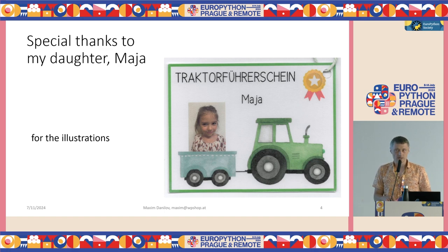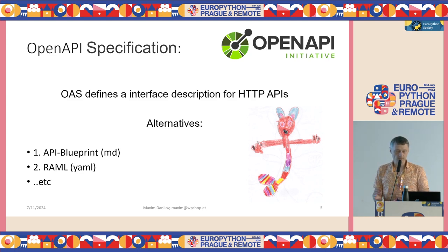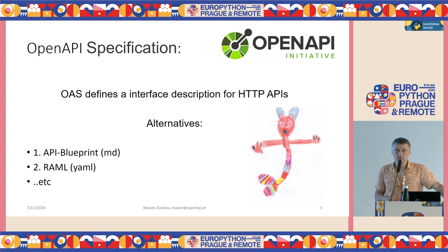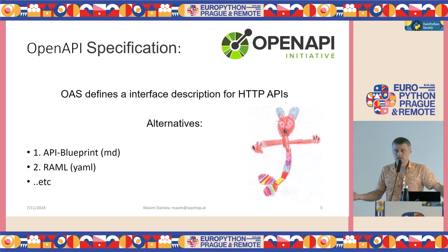Right now we go to our documentation: the OpenAPI specification. What is it? This is a document which describes how I should create an interface description for all our APIs. Of course OpenAPI specification is not the only one — we have alternatives like API Blueprint, where we create documentation in Markdown format, RAML where we write documentation in YAML format, and OpenAPI itself also uses YAML format.